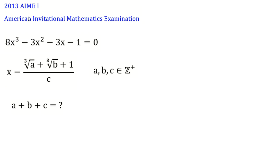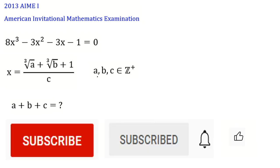We are going to solve this problem from AIME 2013. It says 8x³ - 3x² - 3x - 1 = 0. Find one root of x with this form: (∛a + ∛b + 1)/c, where a, b, c are positive integers, and we should find a + b + c.